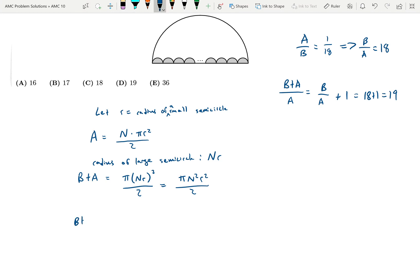So here B plus A over A is equal to pi N squared R squared over 2, divided by N times pi R squared over 2.